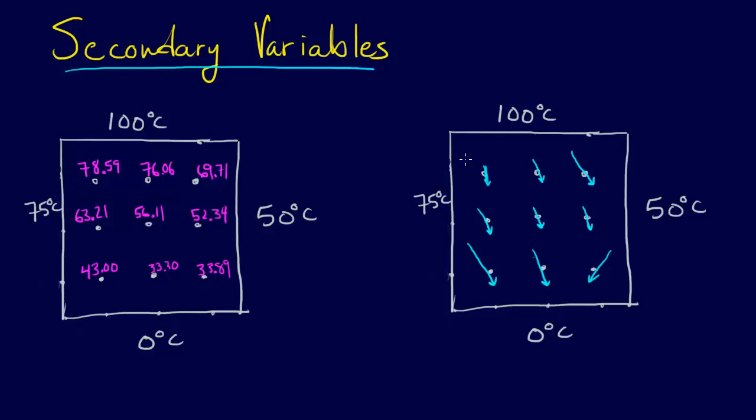So when you solve that problem and you solve for each of these nodes, this is the solution you get: 78.59, 76.06, so you get the temperature at every point on the interior of the plate.